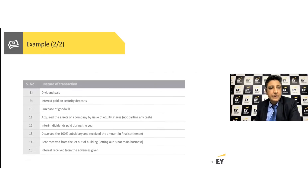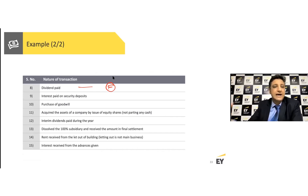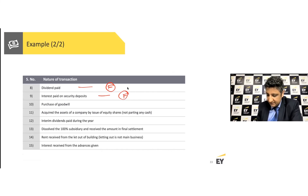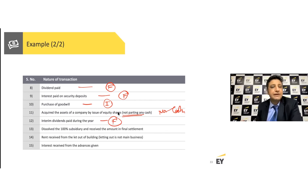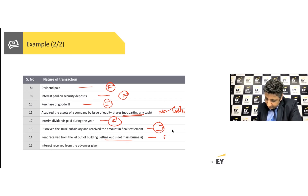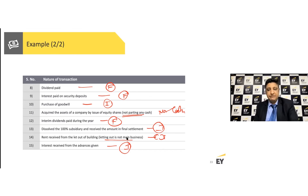Purchase of a license — investing in a long-term asset. Royalty received — operations. Issue of preference shares — financing, as you are funding your business. Purchase of shares of a subsidiary — investing. Dividend paid — financing, since you issued shares and are returning value to shareholders. Interest paid on deposits — financing. Purchase of goodwill — investing. Acquiring assets of a company by issue of shares — non-cash, excluded. Interim dividends — financing. Dissolving a 100% subsidiary and receiving cash — investing. Rent received from letting out a building (not the main business) — operating. Interest received — investing.